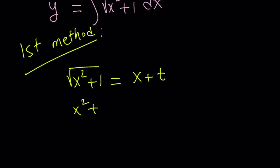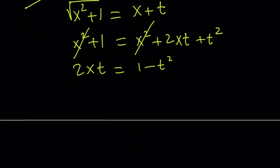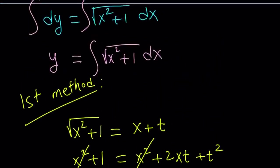You might be asking why do that — because when you do, you're going to be able to write x in terms of t, which is a really cool thing to do. So we square both sides, x squared cancels out. And then I want to isolate x. So 2xt equals 1 minus t squared. Divide both sides by 2t — 2t or not 2t. Anyways, x equals 1 minus t squared divided by 2t. So we were able to write x in terms of t.